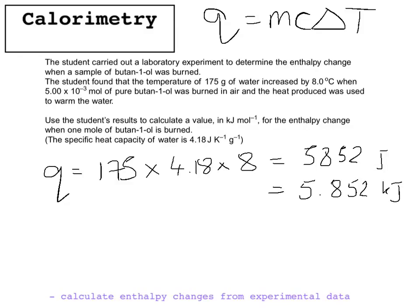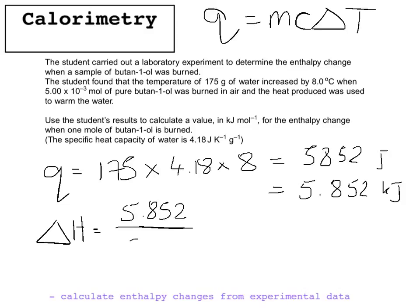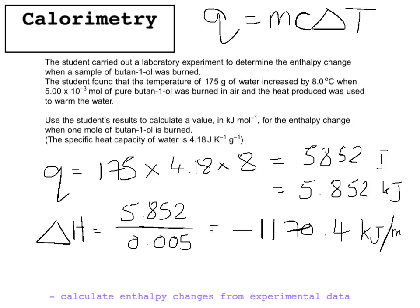Now to find the enthalpy change we need kilojoules per mole. We divide the energy by the number of moles reacting: ΔH = 5.852 ÷ 0.005, which equals 1170.4. The last thing is to make it negative or positive depending on whether the reaction is exothermic or endothermic — that won't happen automatically from the calculation. The temperature of the water increased, so this is exothermic, meaning a negative enthalpy change. Put a negative sign in front and add units: kilojoules per mole.